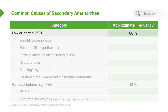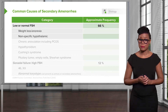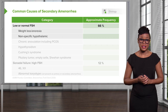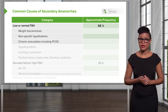Let's now list the common causes of secondary amenorrhea. When you have a low or normal FSH, it can be due to weight loss. If you've lost weight in a very quick time, your FSH might be quite low. If you have an eating disorder such as anorexia or bulimia, your FSH is low. You can have nonspecific hypothalamic amenorrhea, where the hypothalamus stops firing and the anterior pituitary does not release gonadotropins. A very common cause is chronic anovulation, including PCOS.